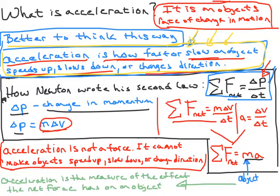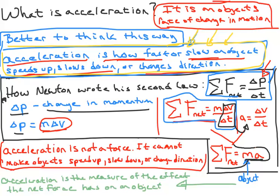When you substitute mass times velocity into that equation, you get an expression with velocity over time. Since acceleration equals delta V over delta T, that's why we're able to write the equation the way we write it today as F-net equals MA.